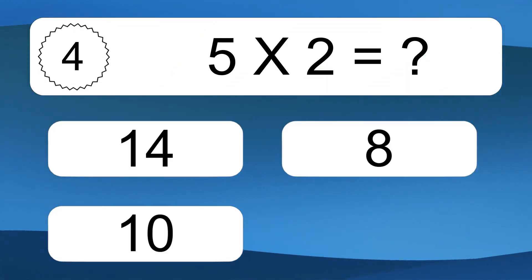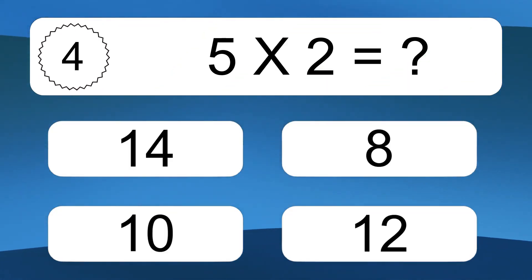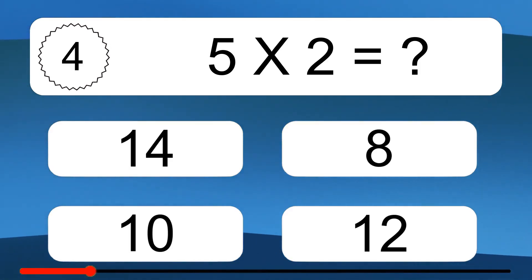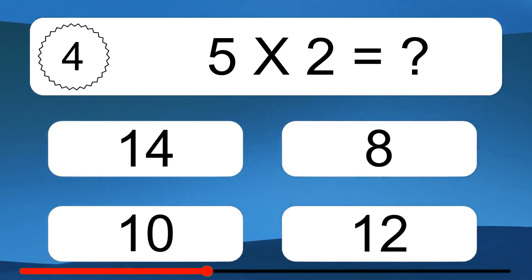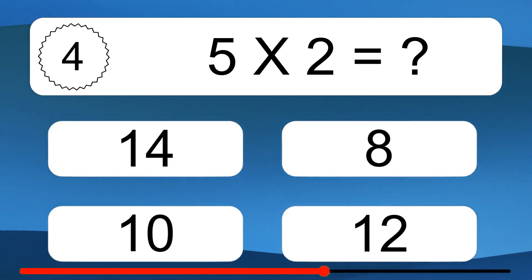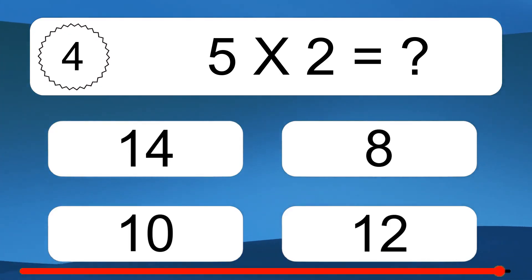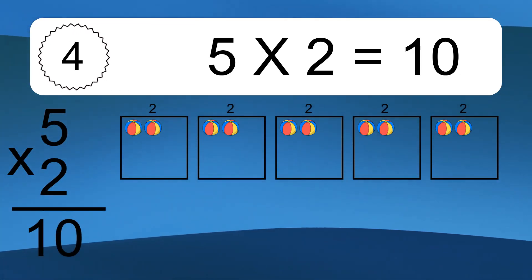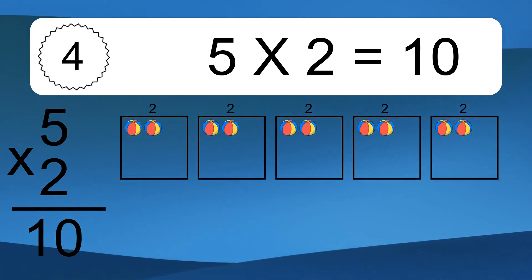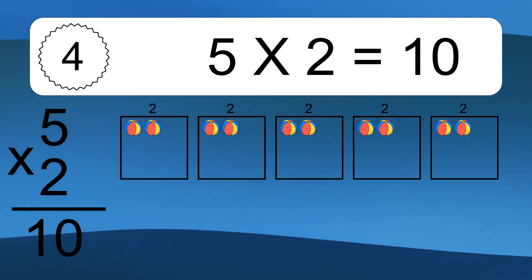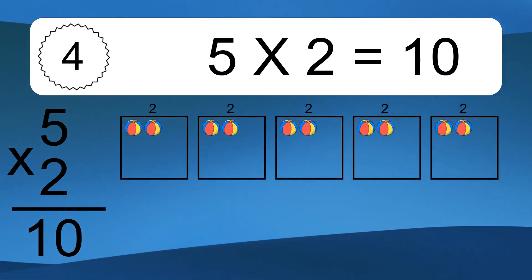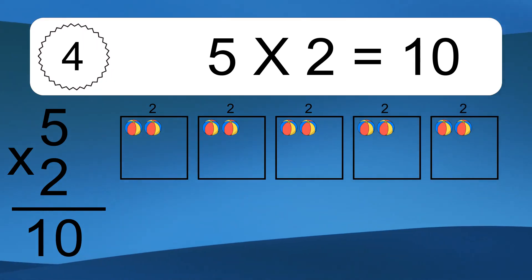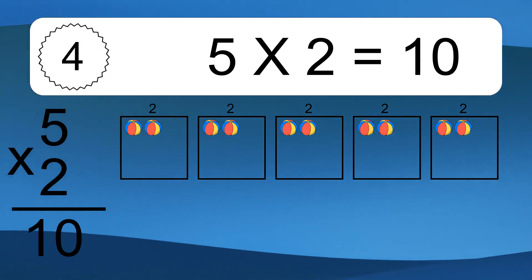5 times 2 equals what? We have 5 boxes, and each box has 2 colorful balls inside. If you count all the balls in all the boxes together, you will have 5 times 2 balls. This equals 10 balls.